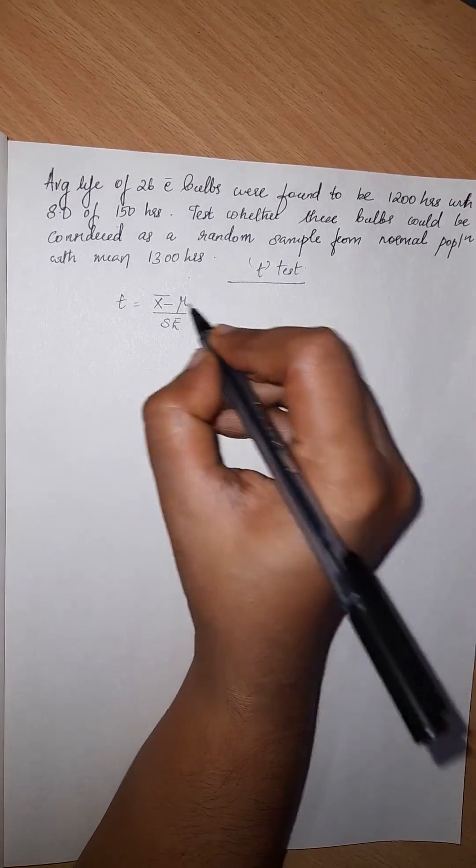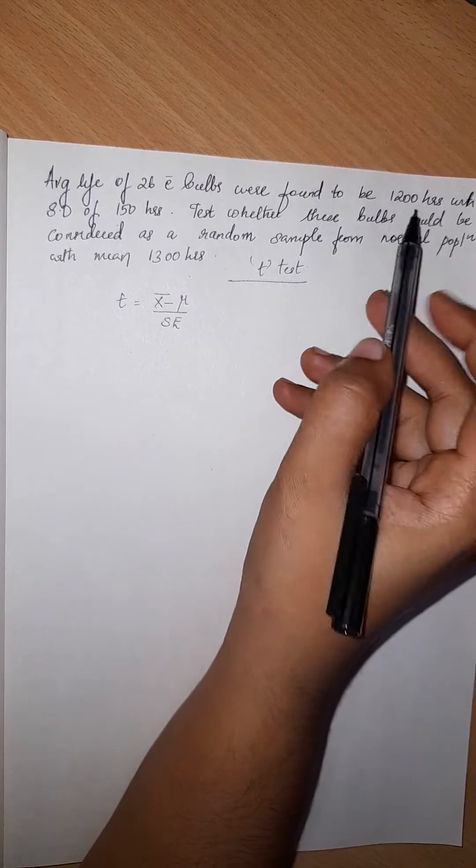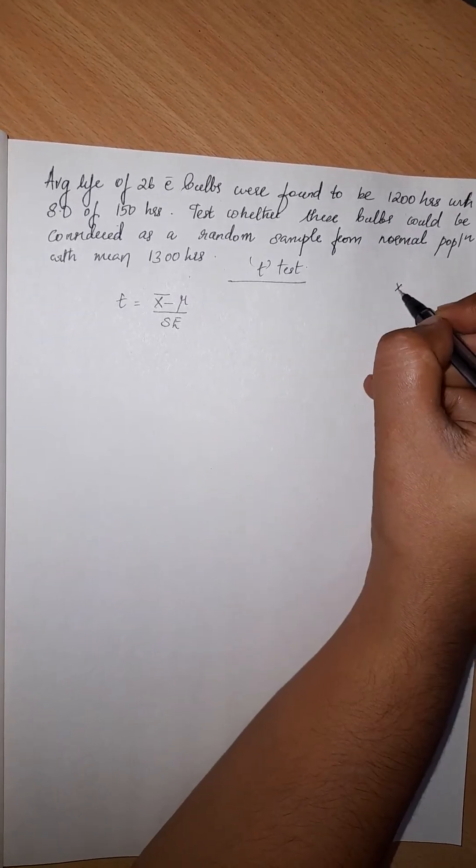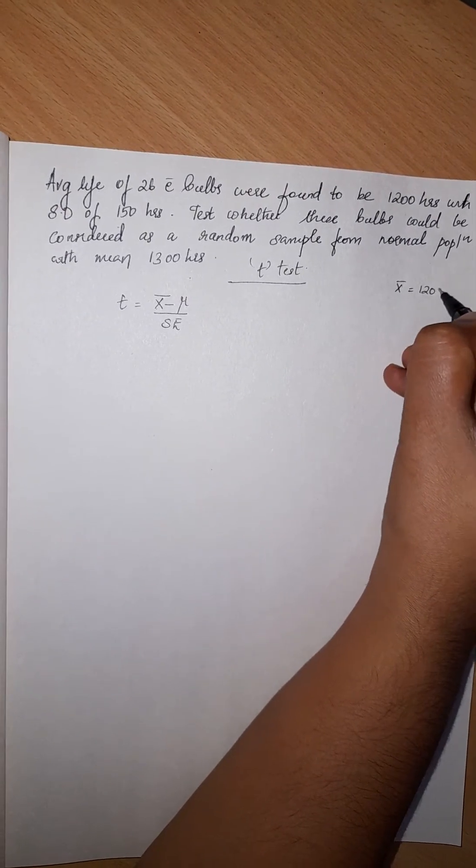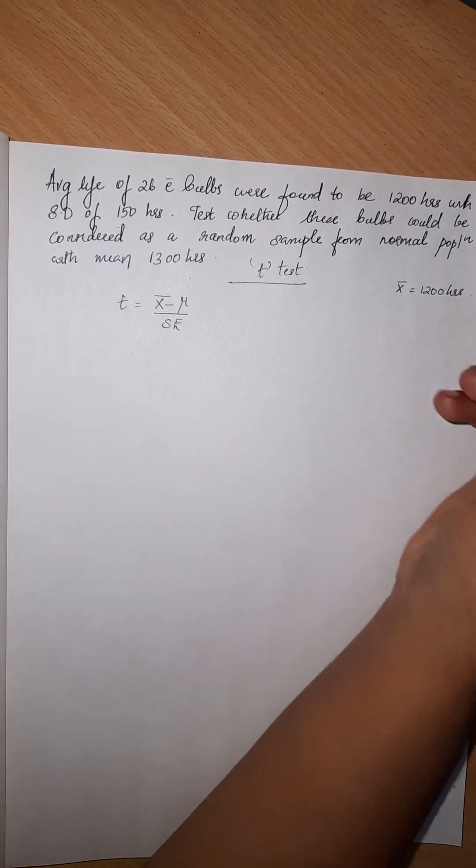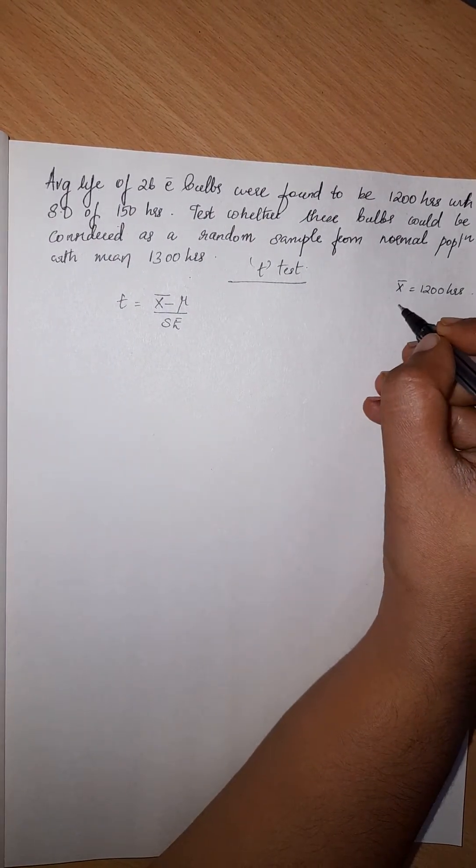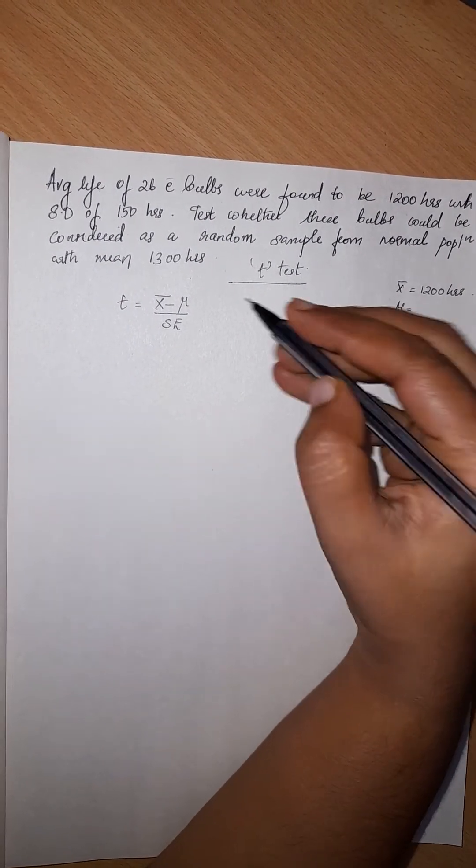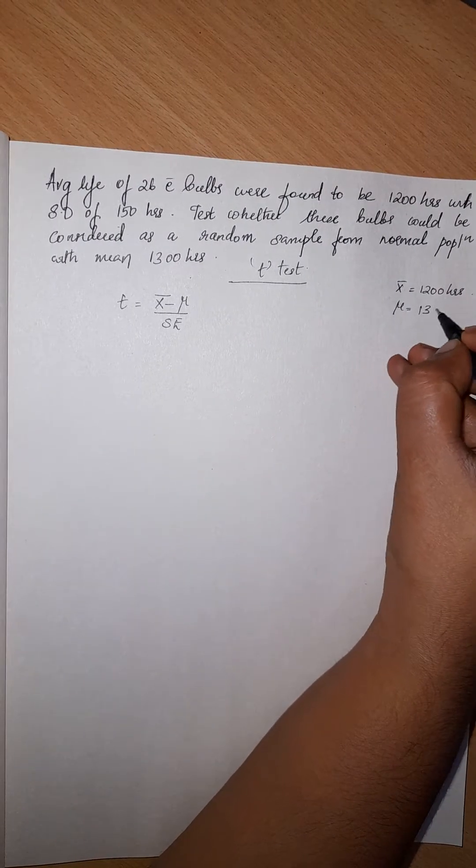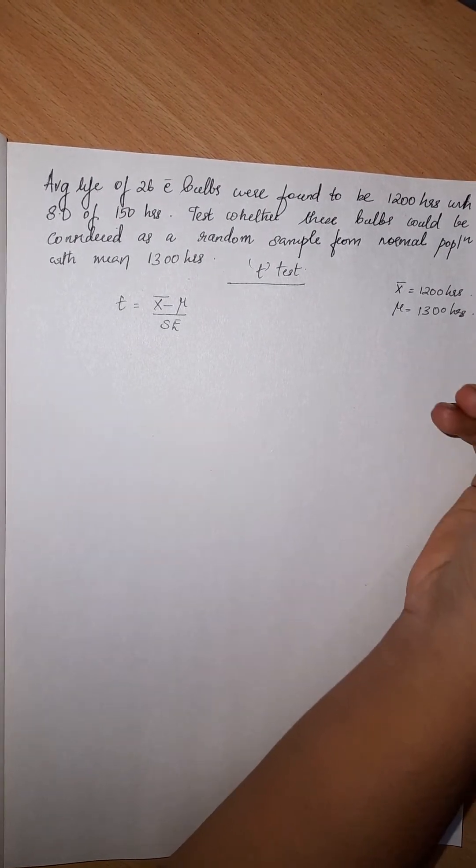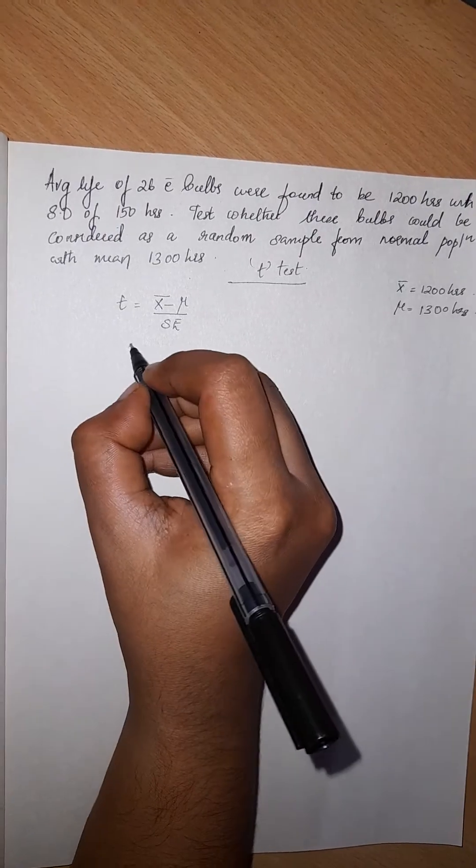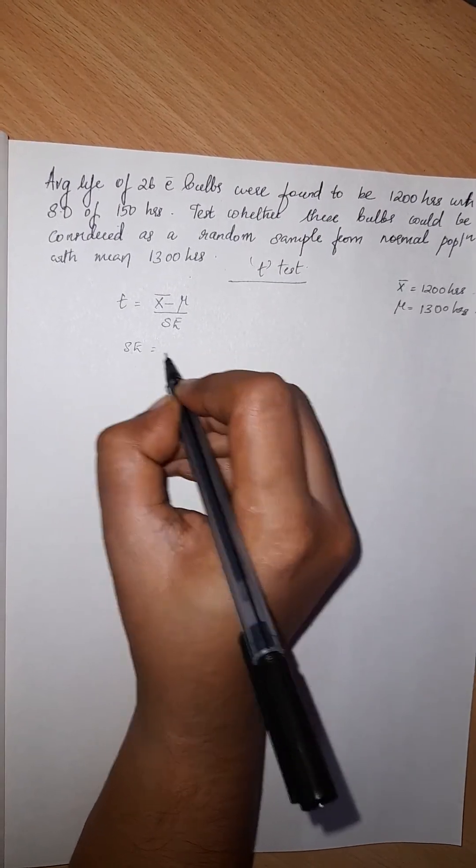In this, x-bar is 1200, the average life. Mu is 1300, the mean. This is standard error, which we calculate.